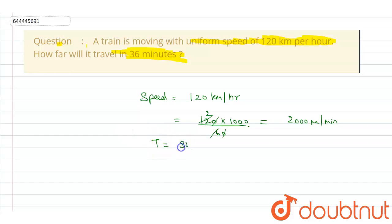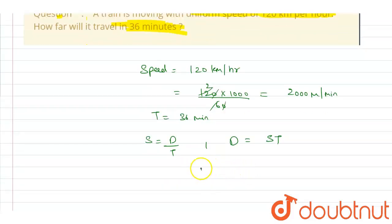We have time as 36 minutes, and we have to find out the distance. We have the formula: speed equals distance upon time. So that means distance is equal to speed into time.